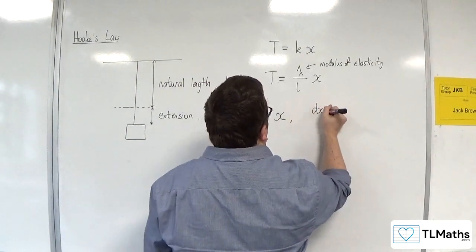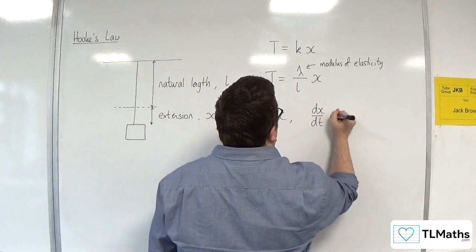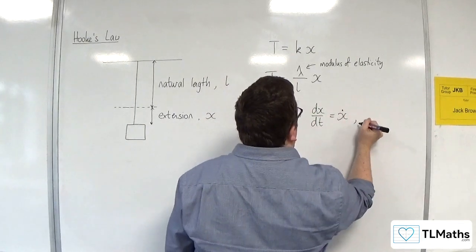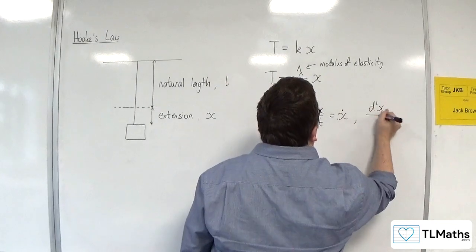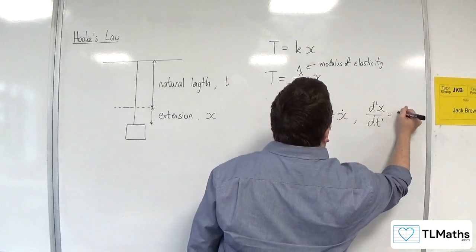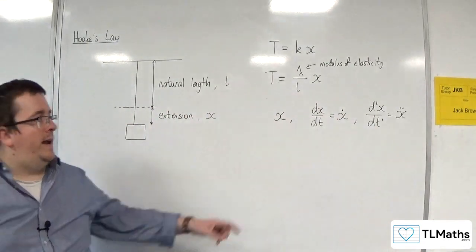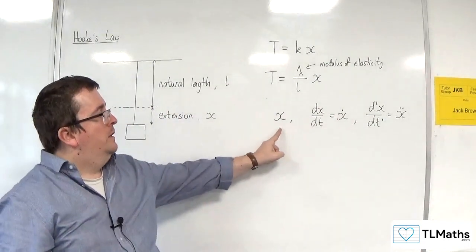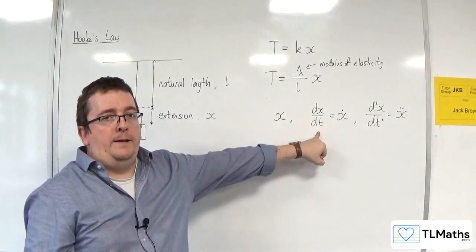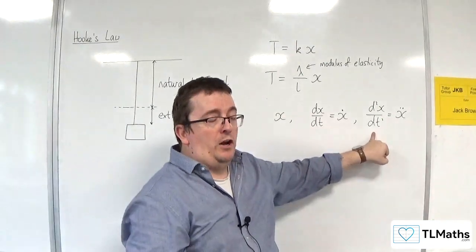Then we've got the DX by DT, or X dot. And then we've got D2X by DT squared, which is your X double dot. OK, where if that is your displacement, then this is your velocity, and this is your acceleration.